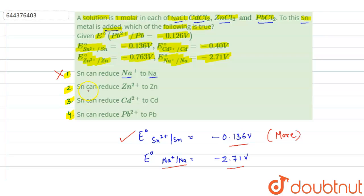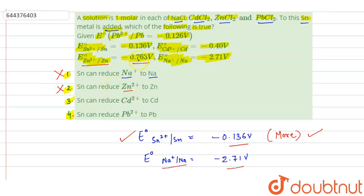In option B, it is given that tin can reduce Zn2+ to Zn. The reduction potential of zinc is minus 0.763 V. Comparing the reduction potential of zinc and tin, the reduction potential of tin (minus 0.136 V) is still more than that of zinc. So tin cannot reduce Zn2+ to Zn. This is also wrong because the reduction potential of zinc is less than that of tin.